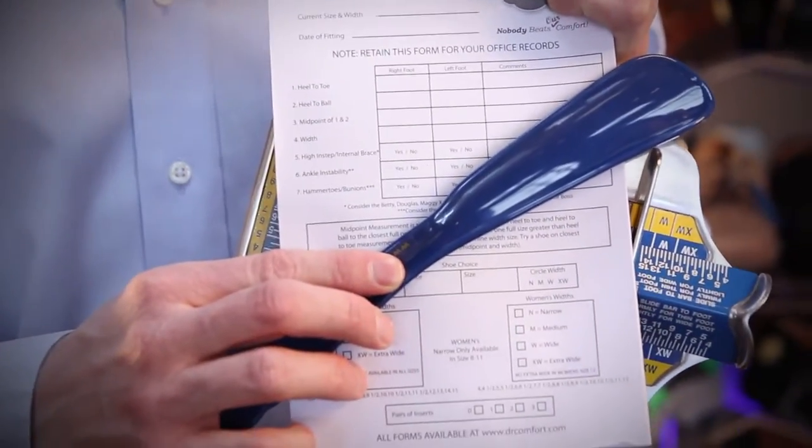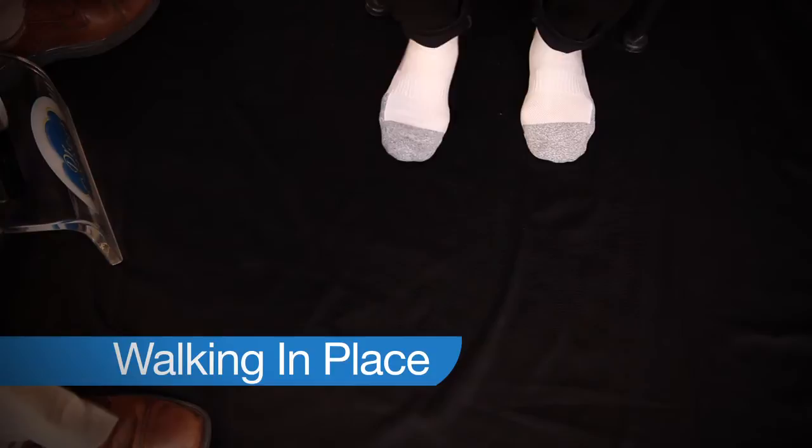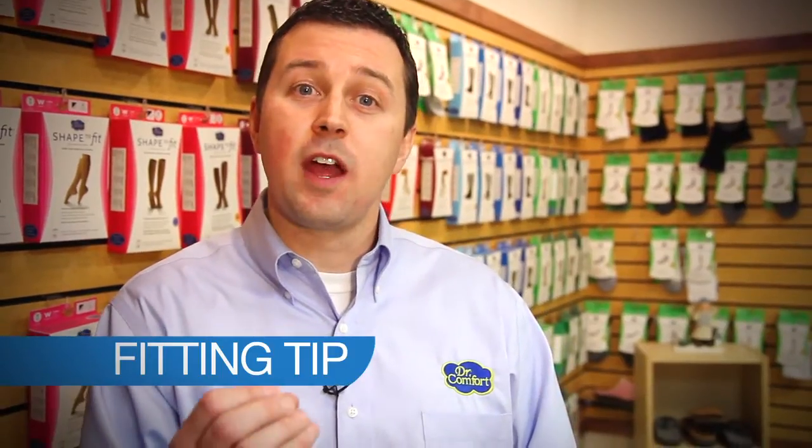And now I'd like to conduct a measurement and fitting on my good friend Jane. To begin, you will want to have the patient stand up and walk in place. A helpful fitting tip in this situation will be to make sure that you're having the patient walk in place. This will ensure a very natural position and will achieve the desired length and width when measured with the Brannock device.